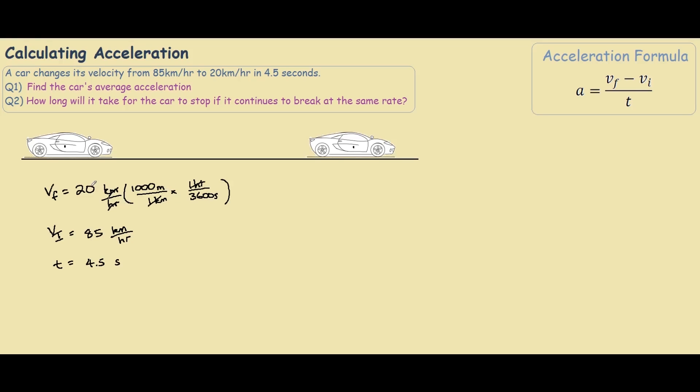So to convert 20 km per hour to meters per second, you actually divide by 3.6, because if you cancel this out and cancel this out, we're left with 3.6 and 1. So 20 times 1 over 3.6 equals 5.6 meters per second. And we do the same thing for the initial. We get 85 times 1 over 3.6 equals 23.6 meters per second.